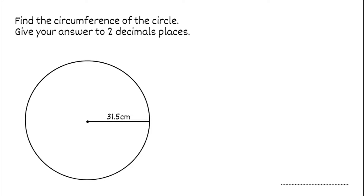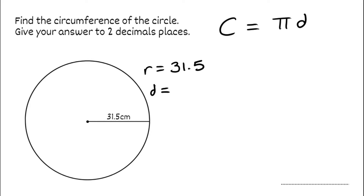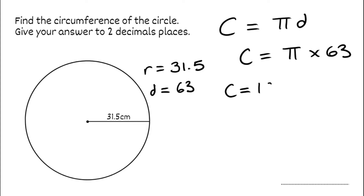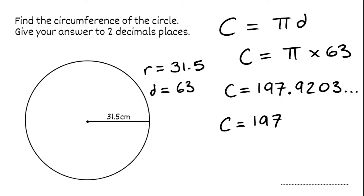For this next question we've got to find the circumference, again leaving our answer to two decimal places. The circumference equals pi times the diameter, so I need the diameter. Looking at the question we're given the radius, which is 31.5. To find the diameter, I double it: 31.5 times 2 gives 63. Substituting in, the circumference equals pi multiplied by 63. On the calculator, pi times 63 gives 197.9203... Rounding to two decimal places gives 197.92 centimetres.